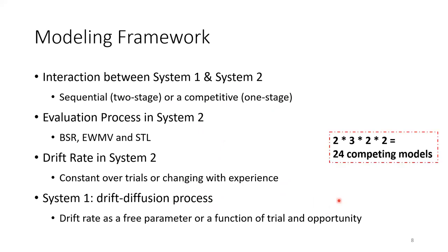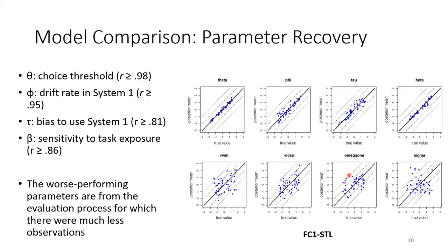With these variations, the initial pool of competing dual process models in our study consisted of 24 models. We then assessed the performance of these 24 models using a model comparison study. The first test was parameter recovery. Here I show an example of the best performing model in terms of the average correlation coefficient between estimated and true parameter values. We can notice that the parameters in the top row were recovered very well.